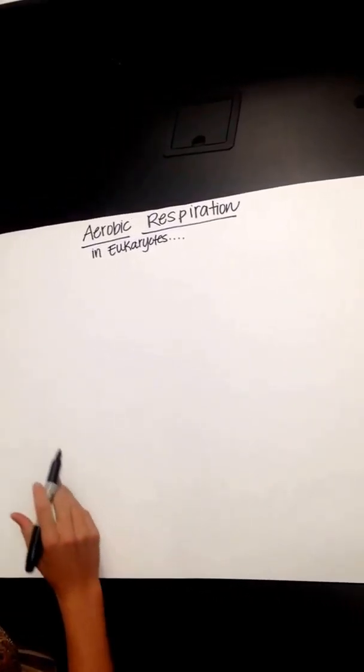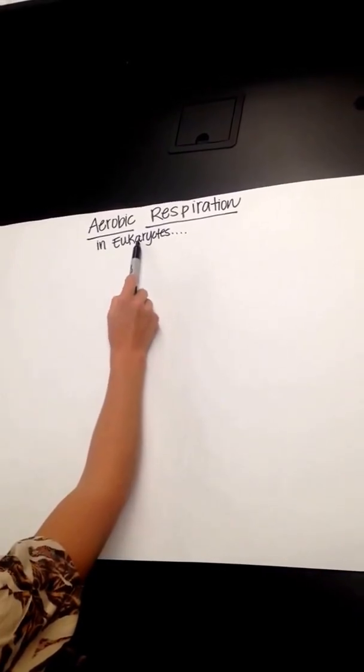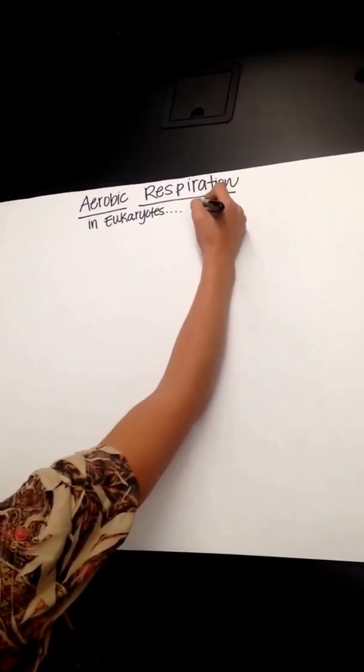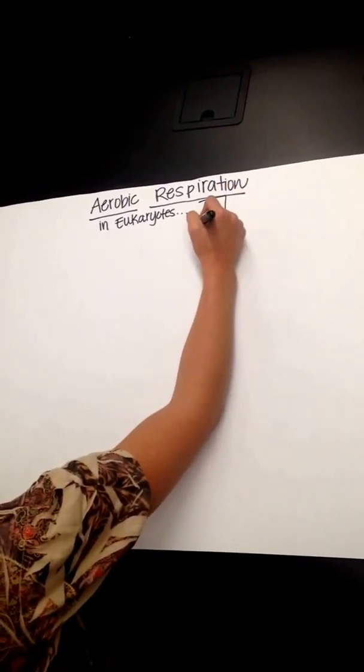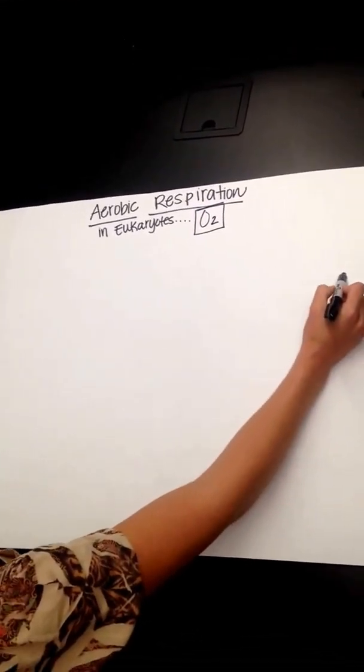Okay, aerobic respiration in eukaryotes. I'm going to have a mitochondria, so you know it's in eukaryotes and it's going to require oxygen. Aerobic respiration definitely is going to require oxygen. So there's three steps, three parts to this.